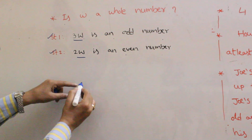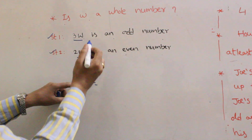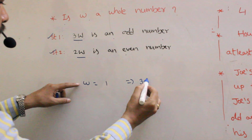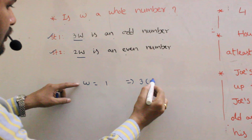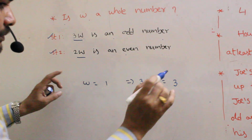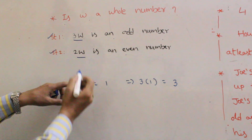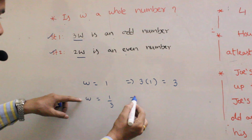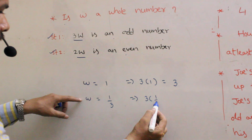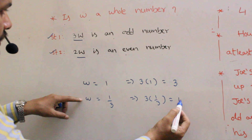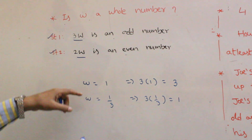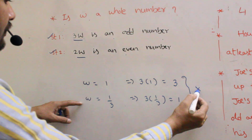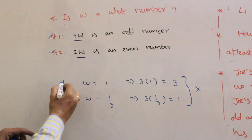suppose W is taken as any odd number, say 1. Then 3W means 3 into 1, which is an odd number — okay, no problem. But suppose if you take W equal to 1/3, then 3 into 1/3 is also an odd number, but W is not a whole number. So the first statement is not sufficient.